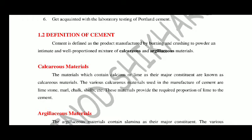The definition of cement is that it is a proper mixture of calcareous and argillaceous materials. Cement is defined as the product manufactured by burning and grinding to powder an intimate and well-proportioned mixture of calcareous and argillaceous materials. The mixture of both materials is well ground in a mill.